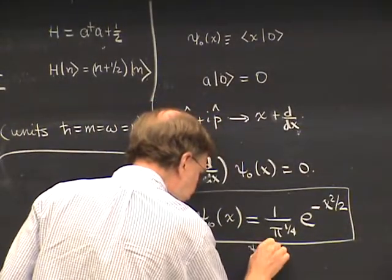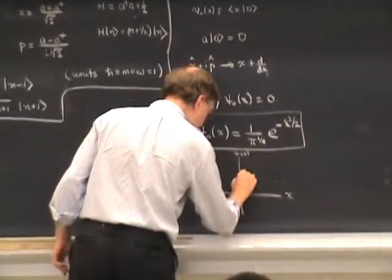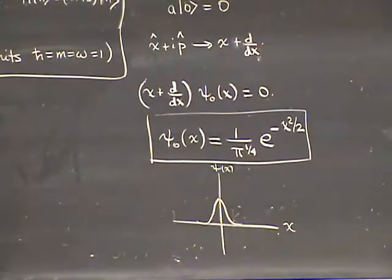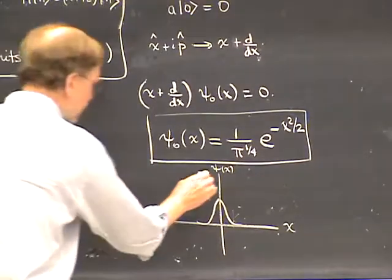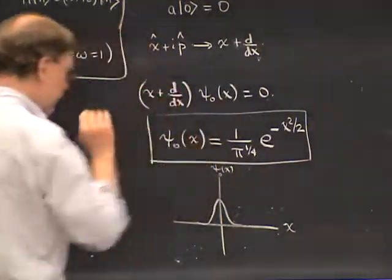It's a simple differential equation, and it's easy to solve. If you solve it and normalize the result, you find that psi-zero of X is 1 over pi to the one-quarter power times e to the minus X squared over 2. The pi factor is the normalization. This is the ground state wave function, which is a Gaussian function — a Gaussian centered at zero for the harmonic oscillator ground state.